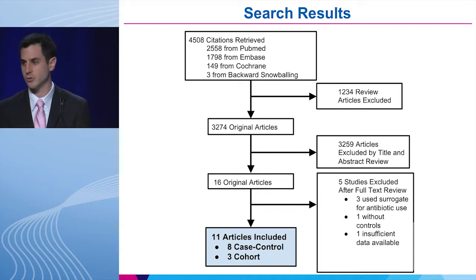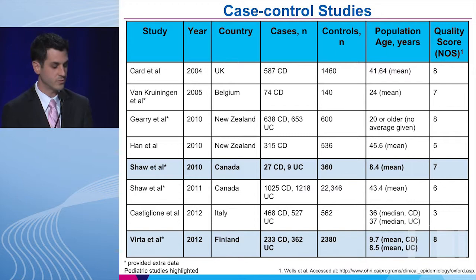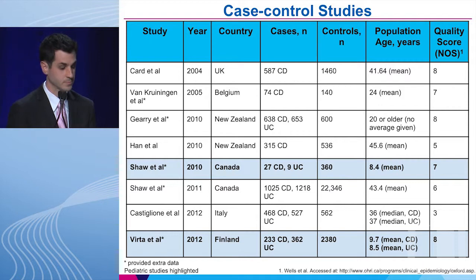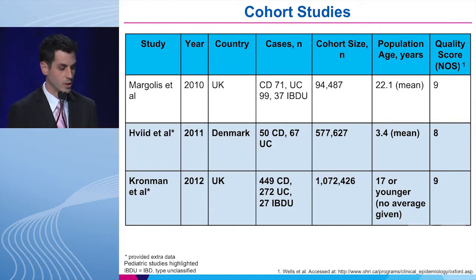After our search, we ultimately ended up with 11 articles — eight case-control and three cohorts. The eight case-control studies were published from 2004 to 2012, with quality scores ranging from three to eight. Most were conducted in Europe and Canada, and two focused primarily on pediatric IBD. The three cohort studies were published between 2010 and 2012, two of which focused on pediatric populations, and all were of high quality.